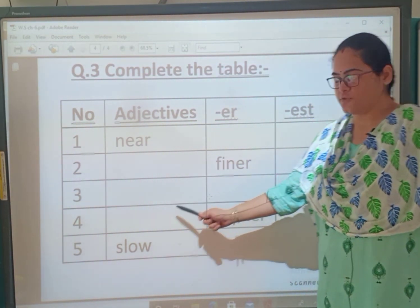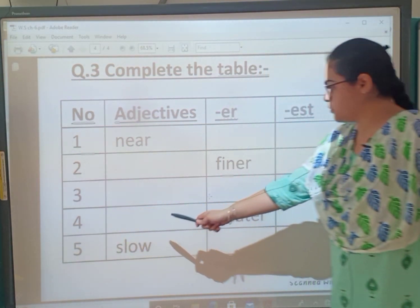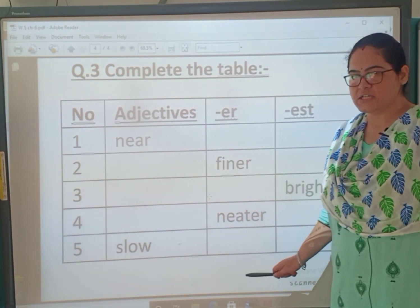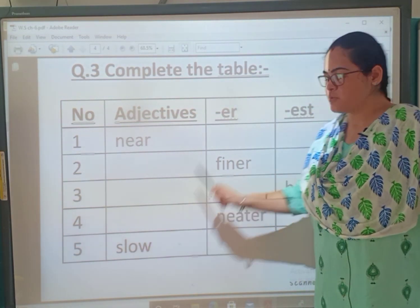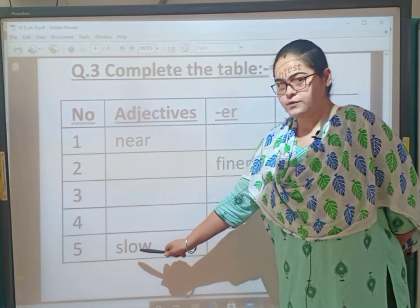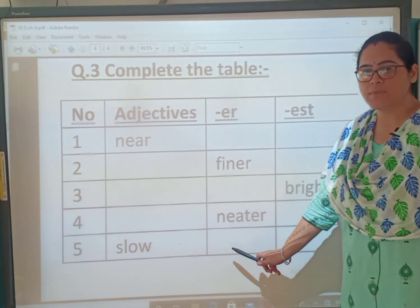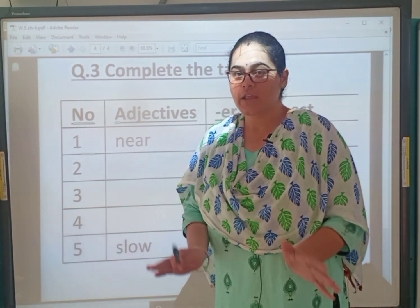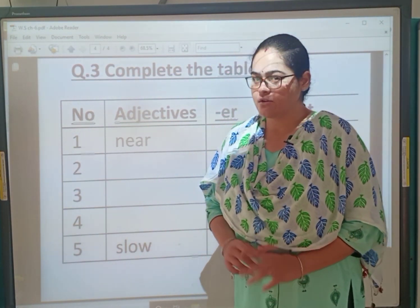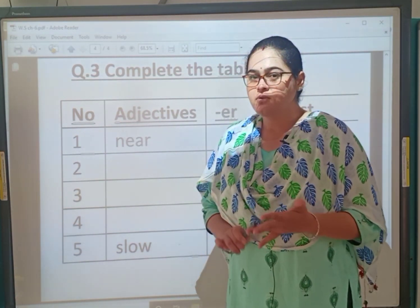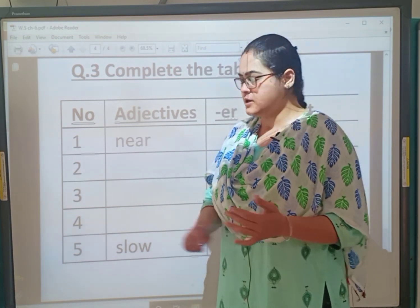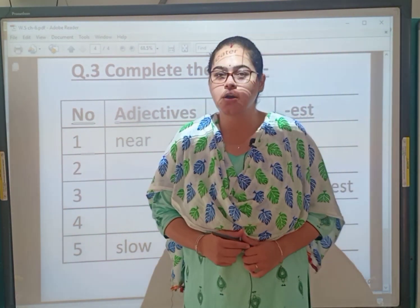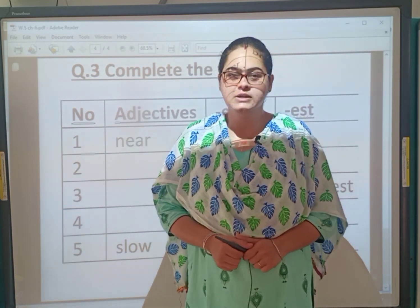Fourth one: find the adjective and est form — the er form 'neater' is given, write the simple and est forms. Fifth one: adjective 'slow' — add -er for 'slower' and -est for 'slowest.' However, some adjectives cannot always take -er and -est. We have done the irregular forms: good, better, best and bad, worse, worst. Complete this in your English grammar notebook, learn it and practice it. Till then, take care and have a nice day!